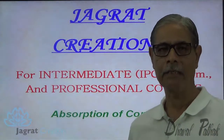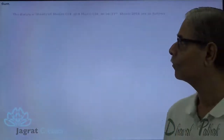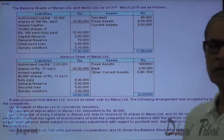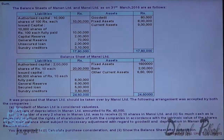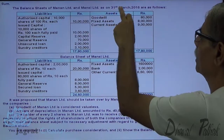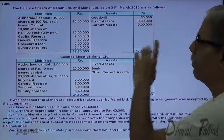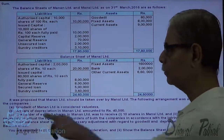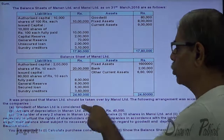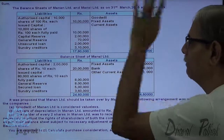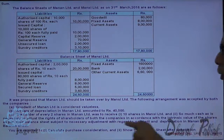Observe the sum on the screen. Try to read it by pausing the video. The balance sheet of Manan Limited and Mansi Limited as on 31st March 2016 are as follows. The first balance sheet is of Manan Limited; the second is of Mansi Limited. It was proposed that Manan Limited should be taken over by Mansi Limited — so Mansi Limited is the purchaser and Manan Limited is the vendor. The following arrangements were accepted by both companies.